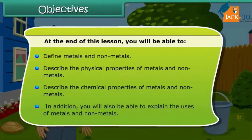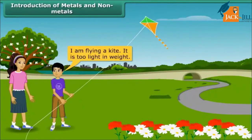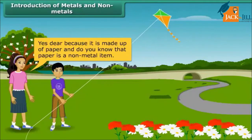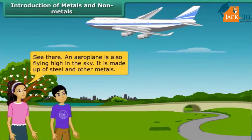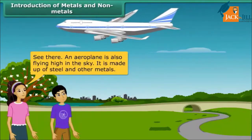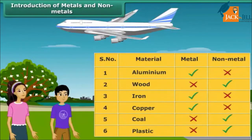You will also be able to explain the uses of metals and non-metals. Hey buddy, what are you doing here? I am flying a kite — it is too light in weight. Yes, because it is made up of paper, and paper is a non-metal item. See there, an aeroplane is also flying high in the sky. It is made up of steel and other metals. But what are these metals and non-metals? Friends, we use many things in our daily lives — these are made up of metals and non-metals.